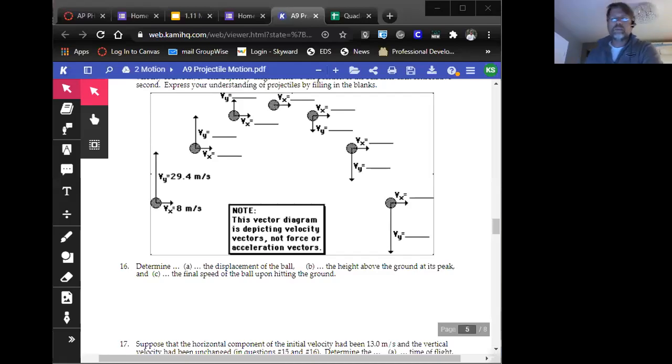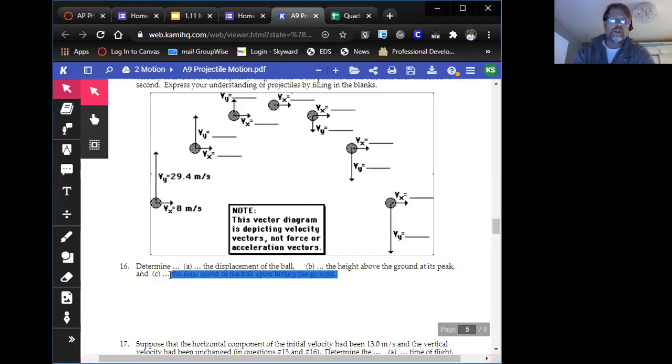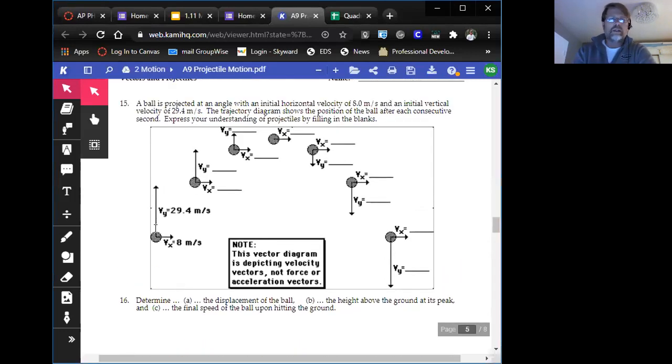All right, so for this last piece, I want to do a different question. We've done time and displacement and a little bit of velocity, but what I want to focus on here is final speed of the ball upon hitting the ground. So let's look at this question 15 and what do they mean with speed? How is that slightly different than velocity?